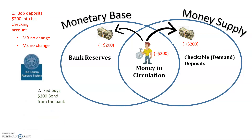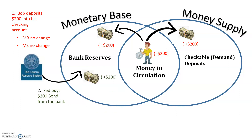Let's look at another scenario. In this one, the Fed buys $200 worth of bonds from the bank. When the Fed buys bonds from the bank, they have to give money to the bank, and all of that money gets directly deposited into the bank's excess reserves.